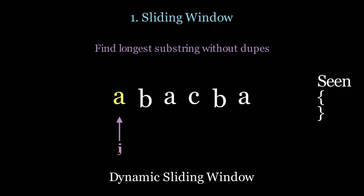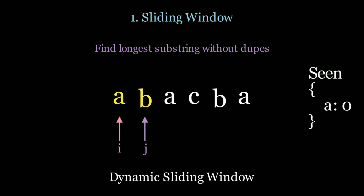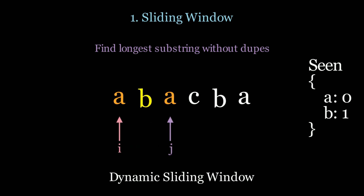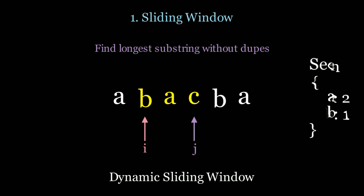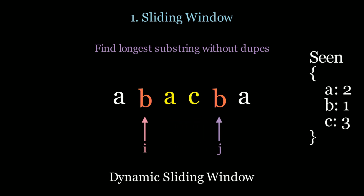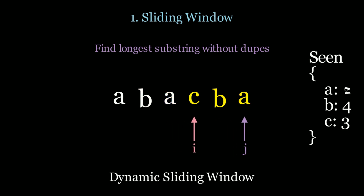In the sliding window technique we move our j pointer as far as we can until it doesn't satisfy the constraint anymore. In this case we found the duplicate 'a', so we move our i pointer until we're valid again and then move j. Notice that we found the duplicate 'b', so we move i again and continue moving j until we hit the end of the array. In this approach we're O(n) instead of O(n²).